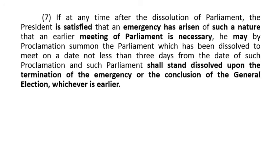If Parliament is summoned under Article 70(7), it will continue up to the termination of the emergency. With COVID-19, we do not know until which period it will last — or otherwise, until the conclusion of a general election. That could be even after one year or even after six months. That we must consider here.